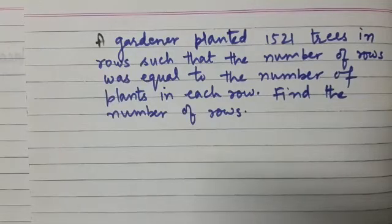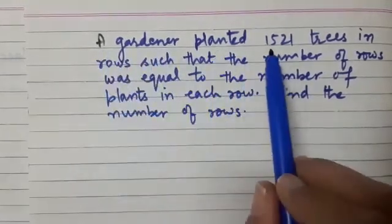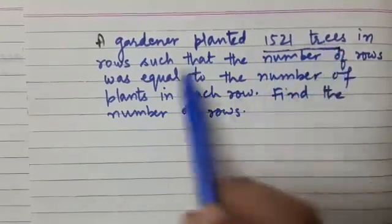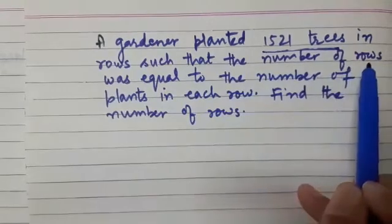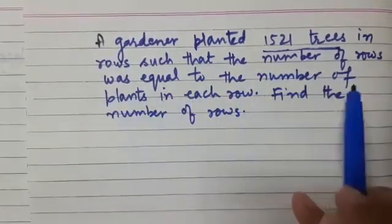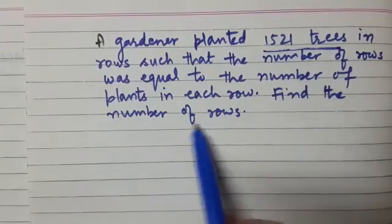Let us read this question first. A gardener planted 1521 trees in rows such that the number of rows was equal to the number of plants in each row. Find the number of rows.